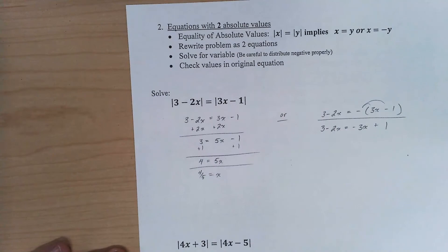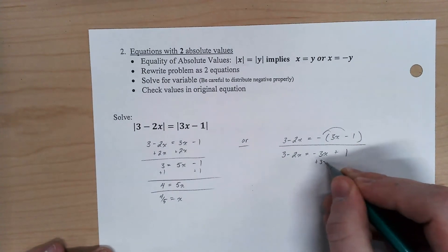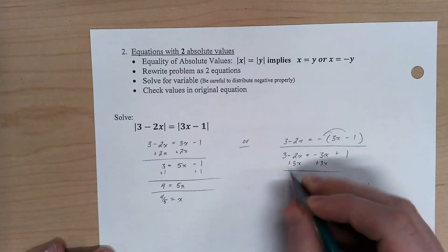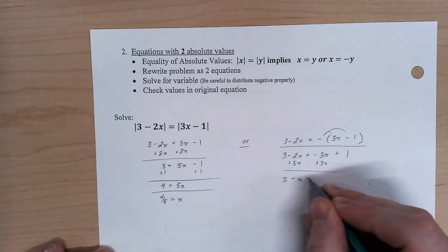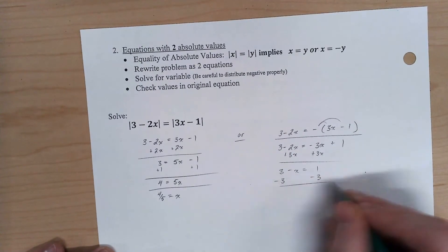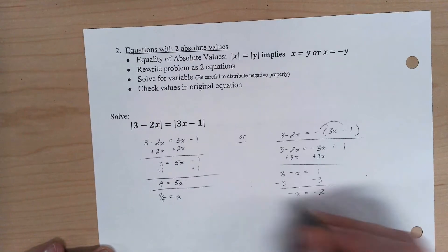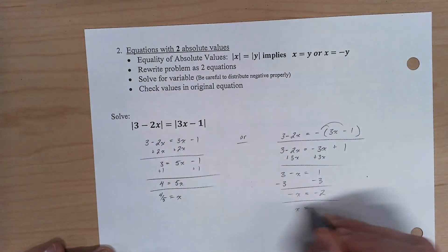Or if I add my 3x over, 3 minus x is 1. Subtract my 3. Negative x is negative 2. Or x is 2.